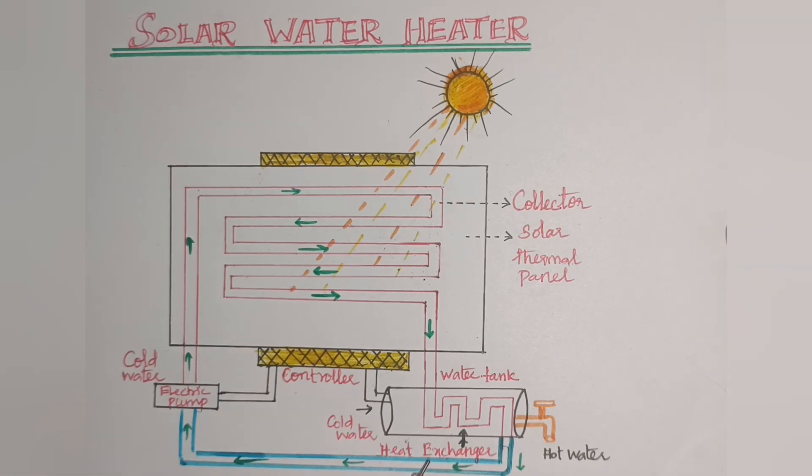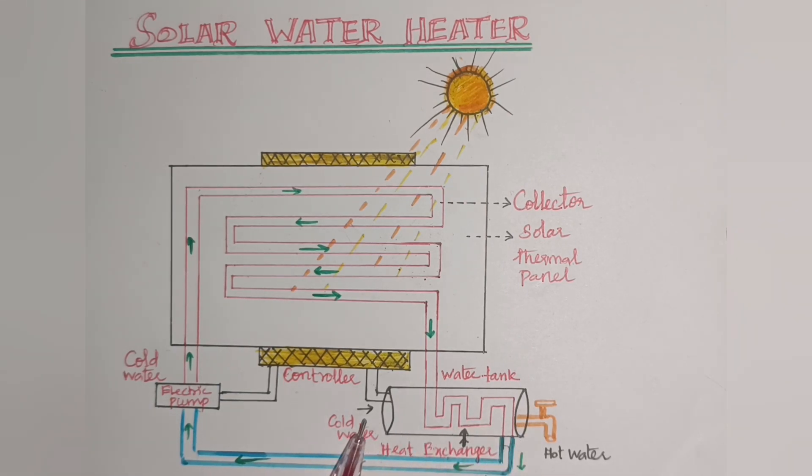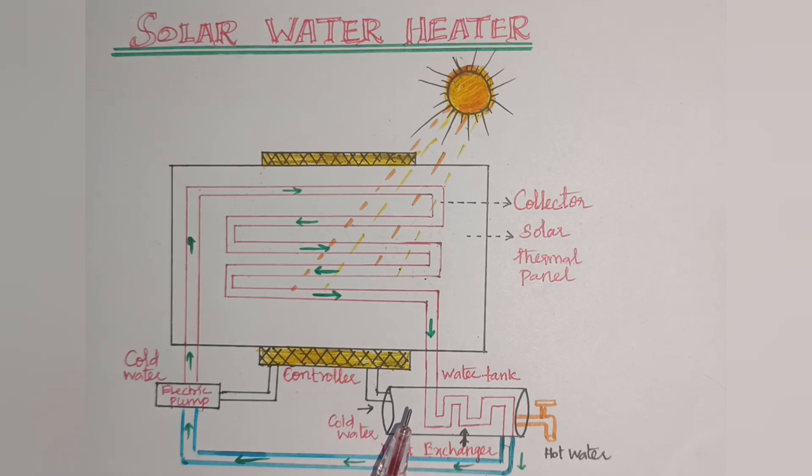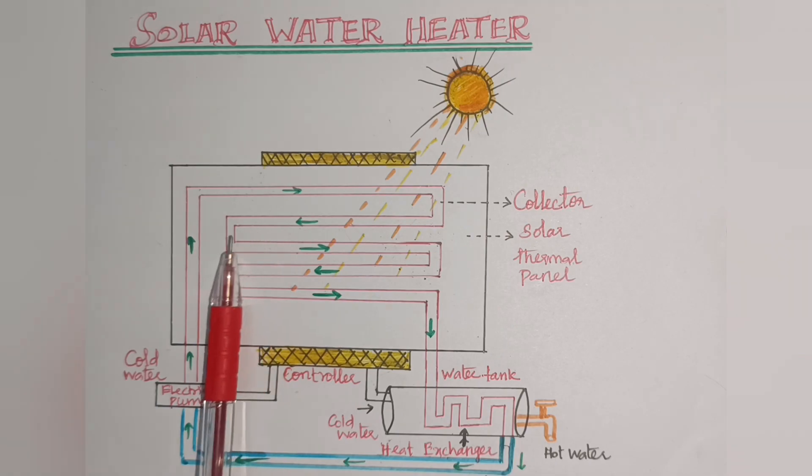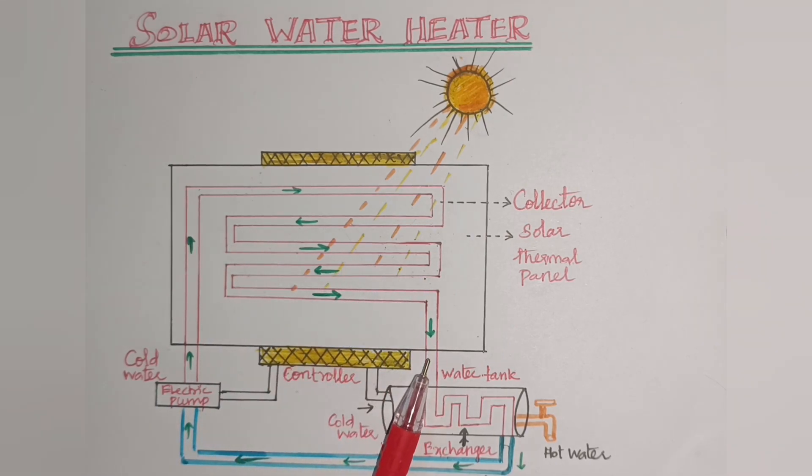Then the heat exchanger is used. This heat exchanger is made up of copper coil, which is kept inside the water tank. This heat exchanger is used to transfer heat energy from the solar heater, passing through the copper pipe to the cold water in this tank.